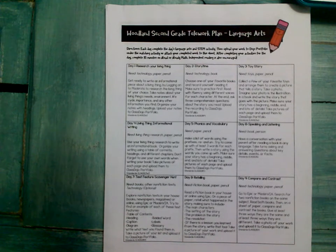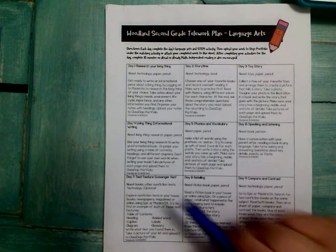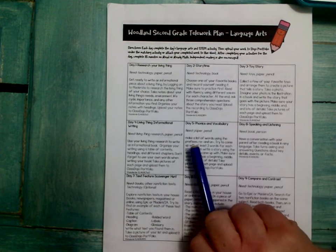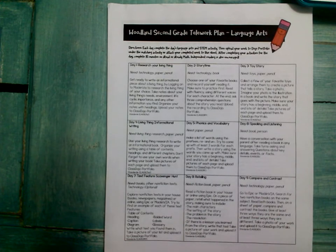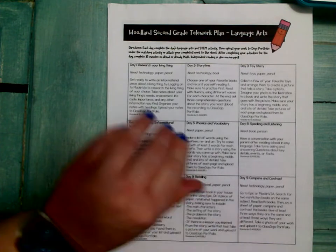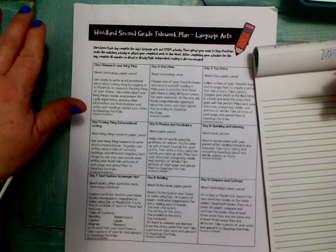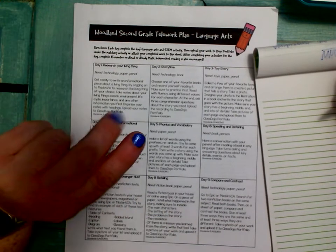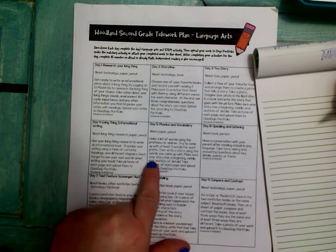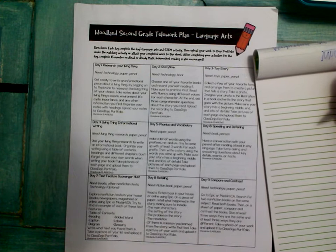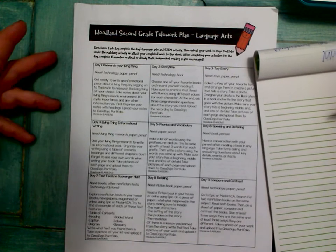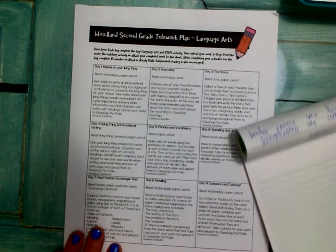Alright cubs, happy Friday! I'm going to go through today's work with you so you understand what to do. On day five it says phonics and vocabulary, and you need a paper and pencil. The directions are to make a list of words using the prefixes re and un. Try to come up with at least three words for each prefix, and then write a story using the words you came up with. Make sure that your story has a beginning, a middle, and an end, with lots of details.